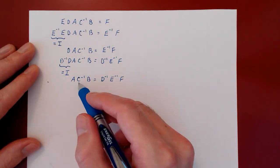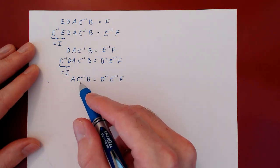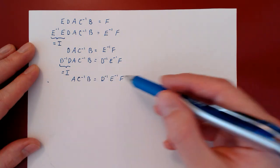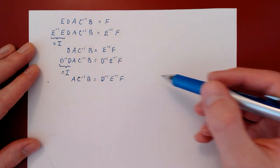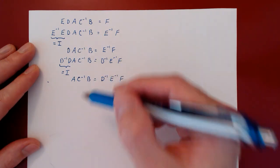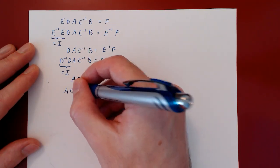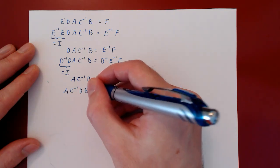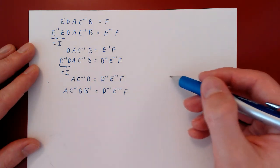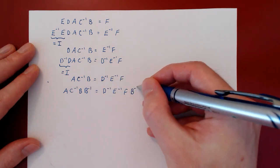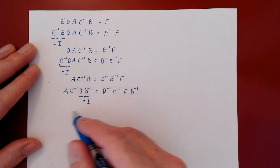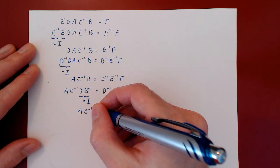We have now fully cancelled everything on the left-hand side of matrix A. We repeat the process to cancel the right-hand side. Because these matrices are on the right of A, we multiply both sides of the equality from the right. The first matrix we encounter is B. To cancel B, we multiply on the right of both sides by B inverse. B times B inverse cancels to I, and C inverse times I is C inverse, so we are left with A C inverse equals D inverse E inverse F B inverse.